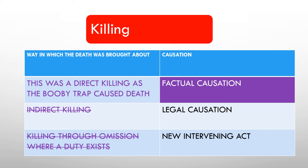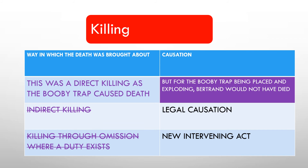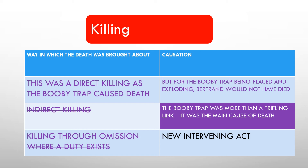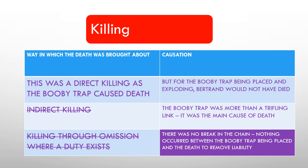For causation: applying the but-for test, but for the booby trap being placed and exploding, Bertrand would not have died — Regina is the factual cause of death. For legal causation, the booby trap was more than a trifling link; indeed it was the main cause of death. There was no novus actus interveniens — nothing occurred between the booby trap being placed and the death to remove liability. If something had happened, discuss whether it falls into the established categories such as medical treatment or the victim trying to escape.